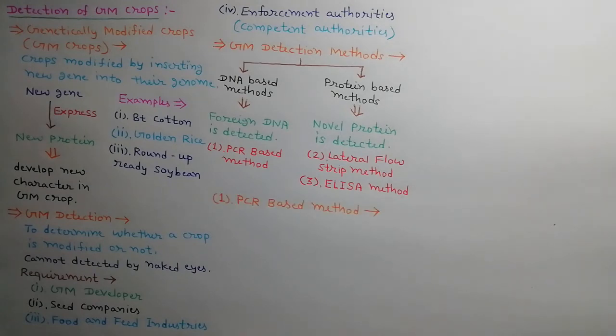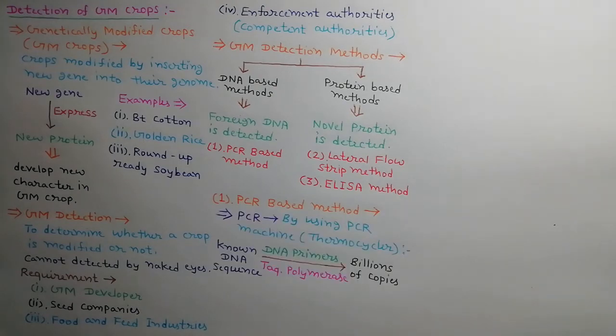First method we will discuss is PCR-based method. In PCR or polymerase chain reaction technique, a known sequence of DNA is amplified to generate billions of its copies. PCR machine is used for this technique, which is called a thermocycler. A known DNA sequence is amplified with the help of DNA primers and Taq DNA polymerase.